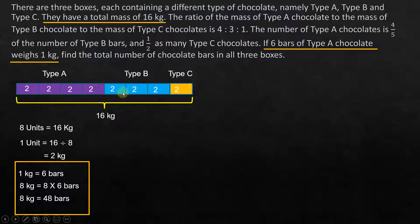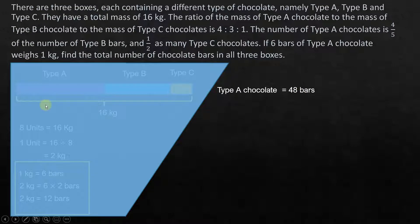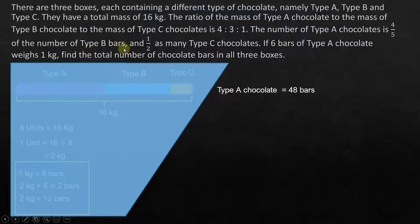So let's set aside that type A chocolate is 48 bars. We have what we need from the mass portion. Now let's go to the second part, which deals only with the numbers. The number of type A chocolate is four-fifths of the number of type B bars, and half as many type C chocolates.